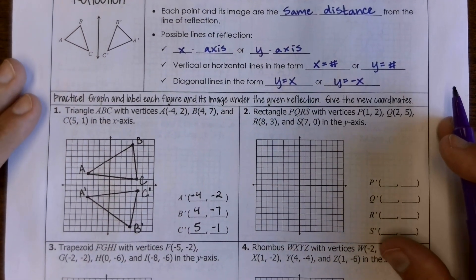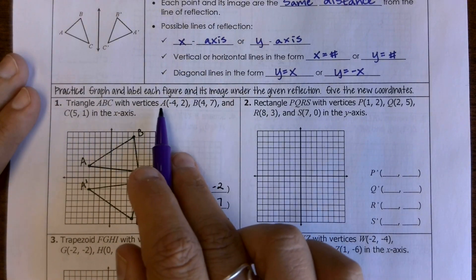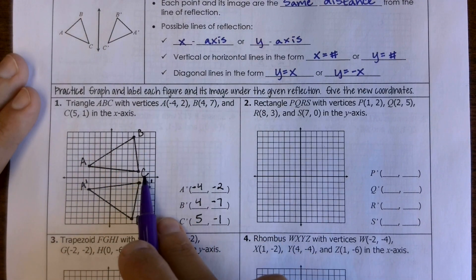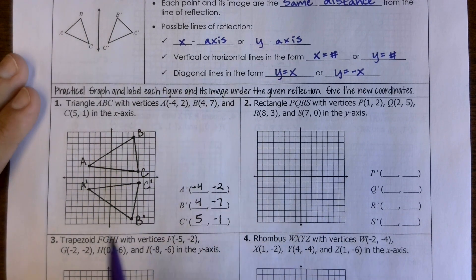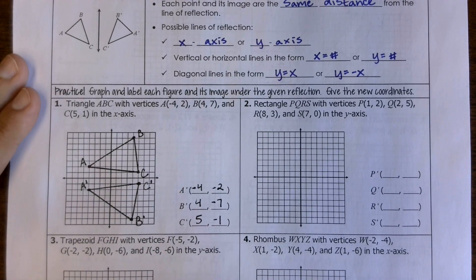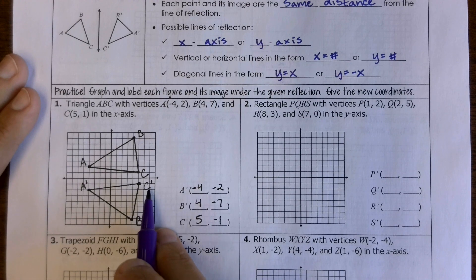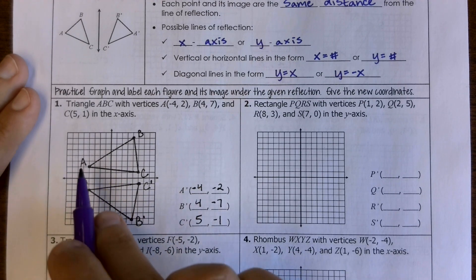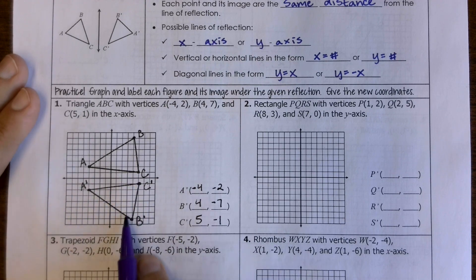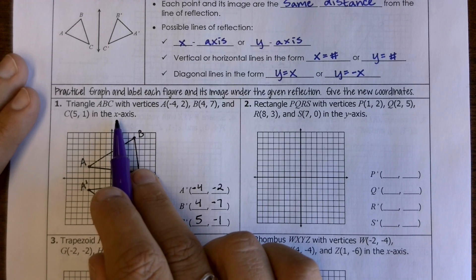So you already have one example filled in for you. Notice that for that pre-image, they're just going to have regular letters A, B, and C to mark those different points. For our image, we're going to have a little dash, kind of an exponent. It's called a prime. So this is an A prime, B prime, C prime, and this is what's telling us this was the pre-image, and then the A prime, B prime, C prime is the image that was created. This one is reflected about the x-axis.